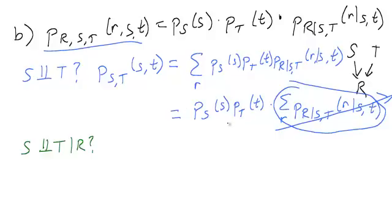So that means that P of S and T is equal to P_S times P_T. And that's exactly the condition for independence. So in this case, they are independent.